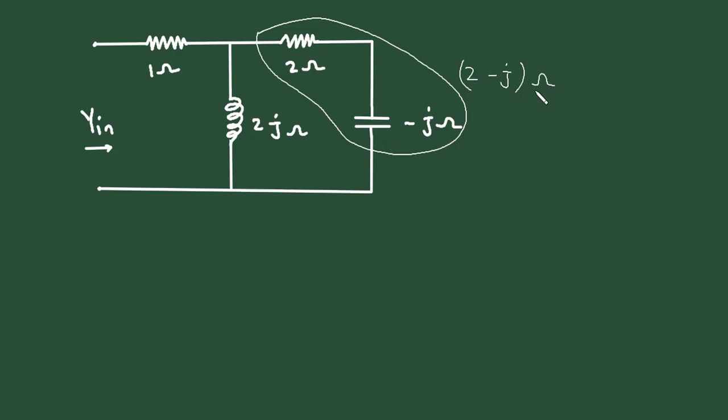Now this 2 minus j and this 2j are connected in parallel. So 2 minus j ohm parallel with 2j ohm. So this will be 2 minus j multiplied with 2j divided by 2 minus j plus 2j.